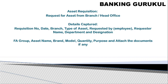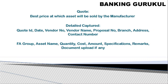Asset requisition is the process of requesting assets. For example, if three people are recruited in a branch, that branch needs three laptops or desktops and can raise a requisition. This can happen from a branch or from the head office. During requisition generation, details captured include: requisition number, date, branch raising the requisition, type of asset, requester name, department, designation, asset name, brand, model, quantity, and purpose. Any official documents can also be attached in the system.